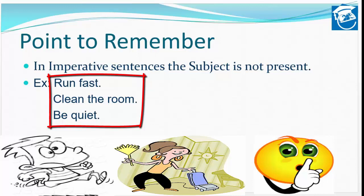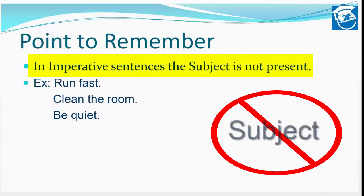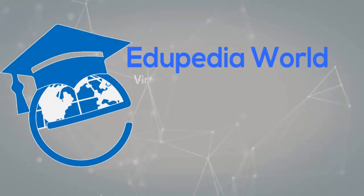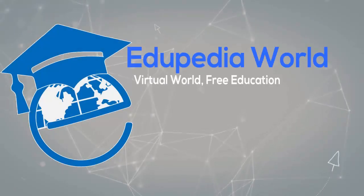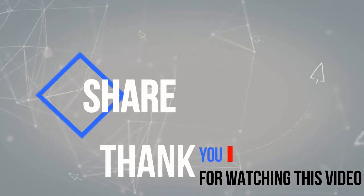Yahan kise yeh baat boli ja rahi hai, kaun yeh baat bol raha hai — woh nahi diya hai; kewal apni baat ko directly aadesh ke form mein ya request/vinti ke roop mein bol rahe hain. Isliye in prakar ke sentences mein subject nahi hota hai. Imperative sentences mein subject hamein prapt nahi hota. So this was the description of subject and predicate. Thank you everyone, and please do subscribe our channel and turn on notifications for more such lessons.